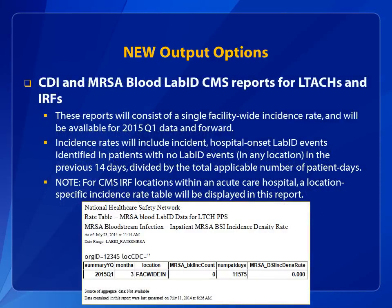New analysis reports are available for LTACs and IRFs that are reporting C. difficile and MRSA bacteremia LabID events as part of CMS quality reporting programs. These reports consist of a single facility-wide incidence rate and are available for 2015 first quarter data and forward. Incidence rates include incident hospital-onset LabID events identified in patients with no LabID events in any location in the previous 14 days, divided by the total applicable number of patient days. The new CMS reports are located under the appropriate folder within the CMS reports analysis folder. For CMS IRF locations within an acute care hospital, a location-specific incidence rate table is displayed in this report.